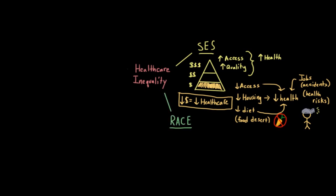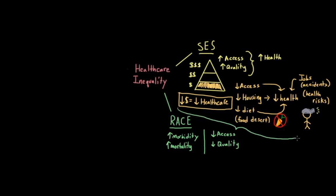Race can also play a large role in healthcare equality. African Americans, Hispanics, and Native Americans tend to have higher morbidity rates — or higher rates of disease and illness — as well as higher mortality rates, or death rates. They also tend to have worse access to healthcare, and the healthcare that they do receive tends to be of lower quality. And although some or even many of the racial differences we see in healthcare can be attributed to the causes listed when discussing SES, it does not explain everything. Even when economic differences and types of insurance are taken into account, minorities are still less likely to receive both everyday standard healthcare as well as treatments for life-threatening conditions.